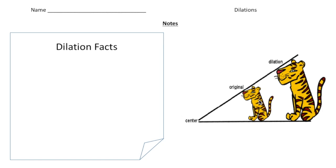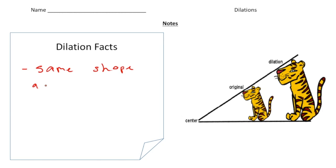Take a look at this image here of the two cats. Here we have an original image and then we have a dilated image. This cat is the same as this cat — this one is just a larger version of this one. So a dilation is an image that is the same shape as the original. Write down: same shape as original.